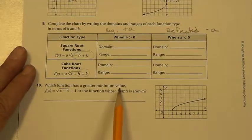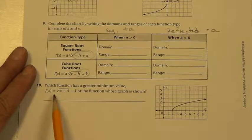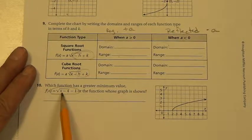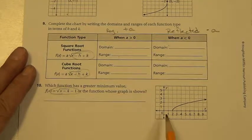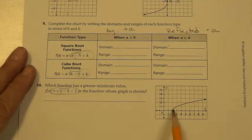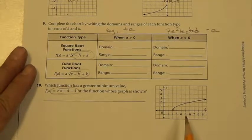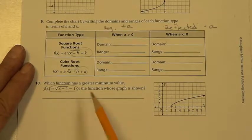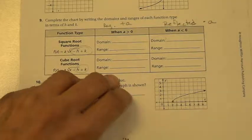The last one, which function has a greater minimum value? This one or this one? You're going to need to graph this one in order to know whether or not it's got a value that's below 0. Because the minimum value on this one is 2, 0. So you'll have to graph that one to see if it's below that. Good luck on this. I'll see you tomorrow in class. Thank you very much.